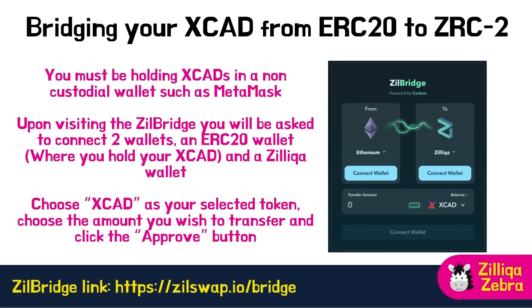Bridging your XCAD from ERC-20 to ZRC-2 is very simple, although you must be holding XCAD in a non-custodial wallet such as MetaMask. Go to Zilliqa Bridge via the link provided. You will be asked to connect two wallets: an ERC-20 wallet where you hold your XCAD, and a Zilliqa wallet. Choose XCAD from the drop-down token list, select the amount you wish to transfer, and click the Approve button, confirming the transaction in your wallet. After that transaction confirms, click the Swap button and confirm again in your wallet.